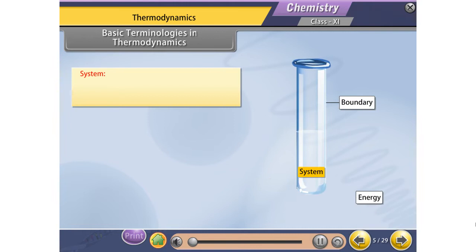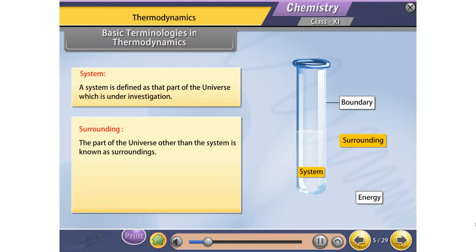A system is defined as that part of the universe which is under investigation. For example, if we are studying the effect of temperature on the properties of water, then water will be taken as the system. The part of the universe other than the system is known as surroundings. If a reaction mixture is taken in a test tube, the reaction mixture constitutes the system, the walls of the test tube constitute the boundary, and everything else is the surroundings.